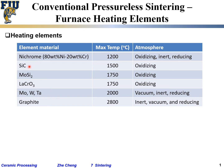Of course you can encapsulate silicon carbide in a vacuum or inert atmosphere and use it at higher temperatures. But most commonly it is just used in an oxidizing atmosphere. The next material is molybdenum disilicide — we call it MoSi2.